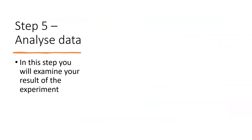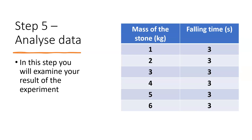The next is step five: analyze data. In this step, you examine your experimental results. You make a table with one column for the mass of the stone and one column for the falling time — the time taken by each mass to reach the ground. For example, if we get three seconds for all masses, that means all masses are taking the same time to reach the ground. In this step, we analyze the data we have recorded.